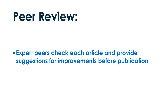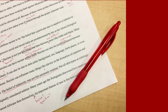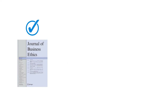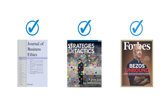Peer review is an editing process where experts check articles submitted to a journal and provide suggestions for improvements before the article is published. This is similar to how you might review a classmate's rough draft in class. Peer review used to be reserved for scholarly journals, but now many professional and even popular magazines use peer review.